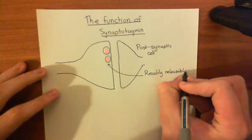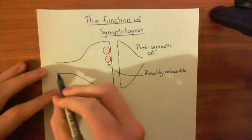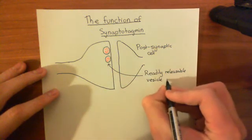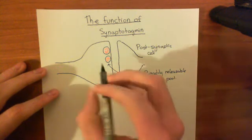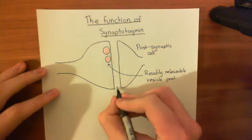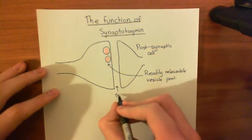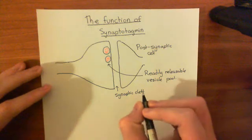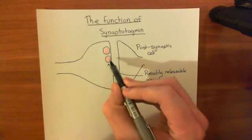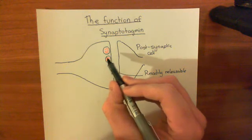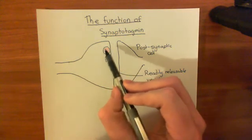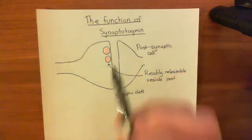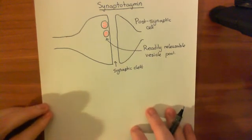When an action potential comes along the axon and arrives at the axon terminal, these synaptic vesicles in the readily releasable vesicle pool will be the first to fuse with the membrane and have their contents released into the space between the pre- and post-synaptic neuron, which is known as the synaptic cleft.